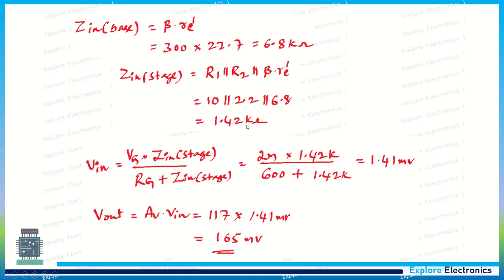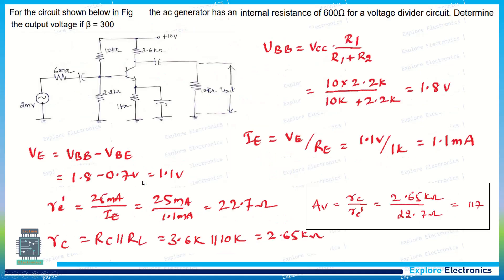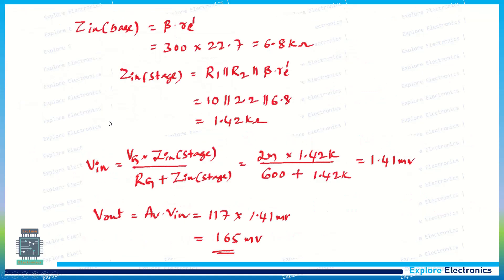By using 2 millivolts, we need to calculate the input Vin. The Vin will be 1.41 millivolts by taking 1.42 kilo-ohms as Zin and 2 millivolts as VG, with RG at 600 ohms and Zin(stage) at 1.42k.